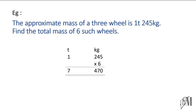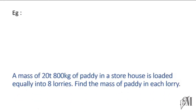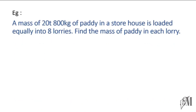Moving on to a question based on division of masses: a mass of 20 tons and 800 kilograms of paddy in a storehouse is loaded equally into eight lorries. Find the mass of paddy in each lorry. You have to divide 20 tons and 800 kilograms by 8. Division of mass can be done in two methods, and I will tell you both — you can follow whichever is easy for you. The first method: we write the tons and kilograms separately and divide by 8.